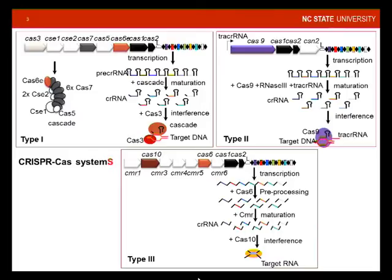In type 1, the signature gene is Cas3. In type 2, the signature gene is Cas9. And in type 3, the signature gene is Cas10. Those various proteins carry out specific idiosyncratic processes in either the transcriptional pattern, transcriptional control, small interfering CRISPR-RNA maturation and biogenesis, or interference.